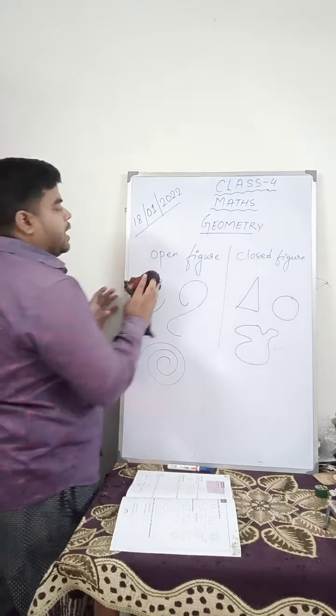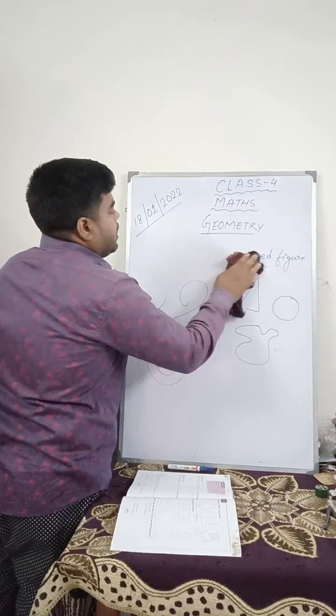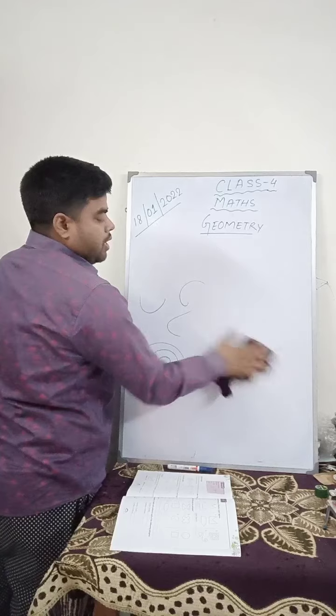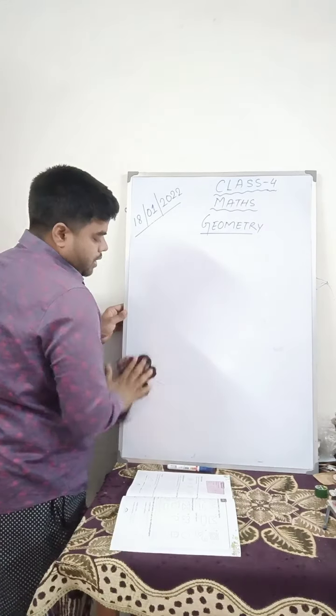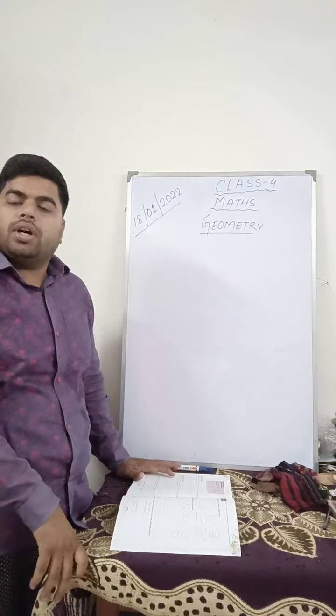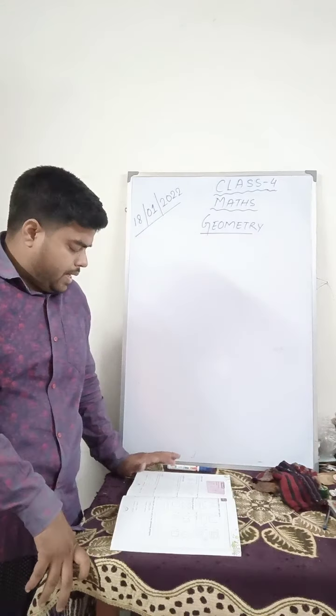So as you can see, a triangle has three sides, a quadrilateral has four sides, a pentagon has five sides, hexagon has six sides, septagon has seven sides, octagon has eight sides, nonagon has nine sides, like this, they are all polygon.